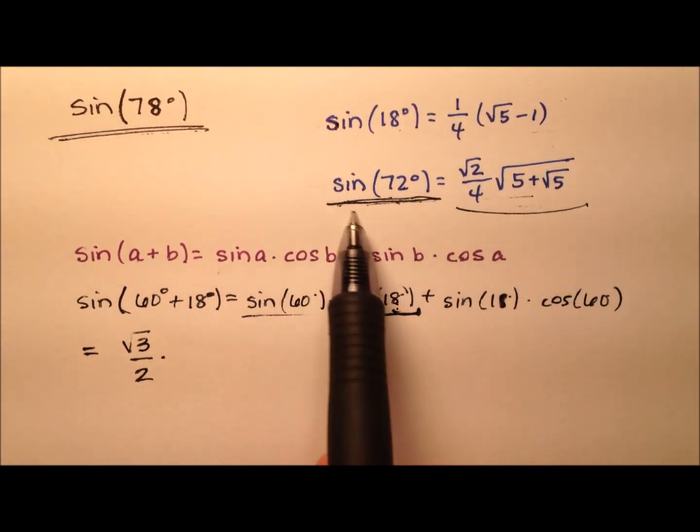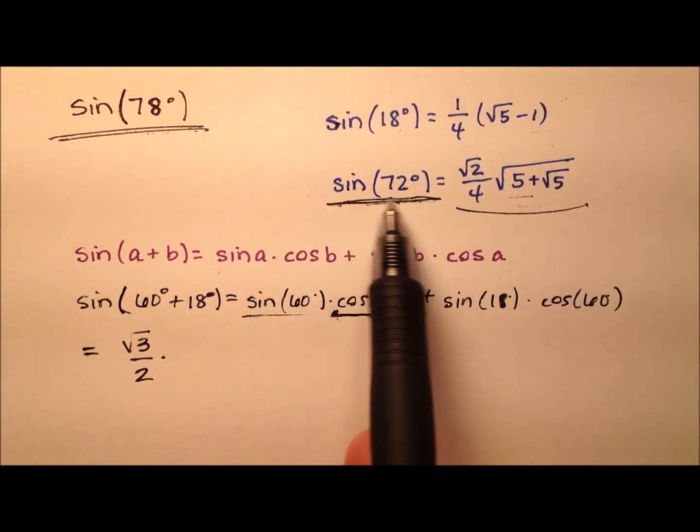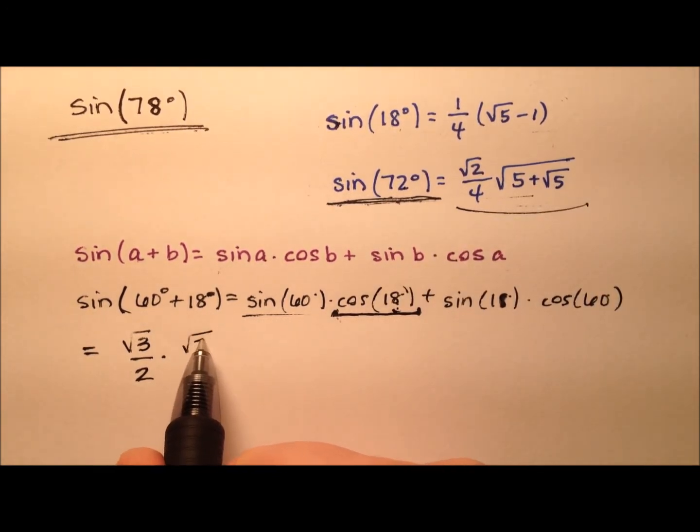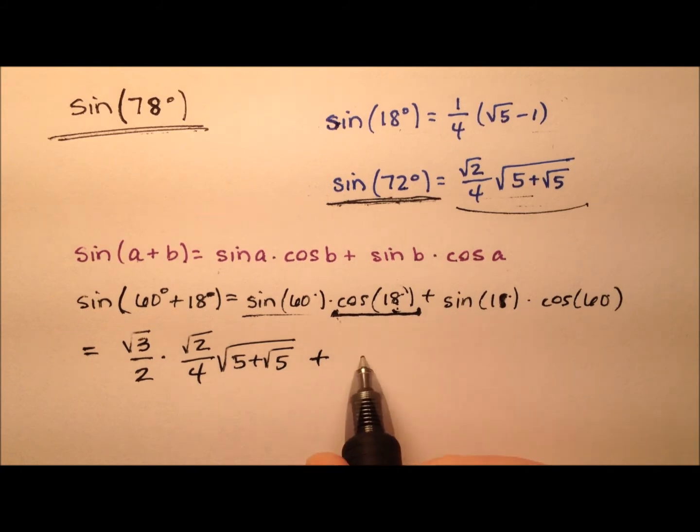The reason I'm going to make this exchange is because the videos for the sine of 18 and 72 have already been worked out explicitly there. We'll go ahead and put that square root of 2 over 4 multiplied by that radical expression.